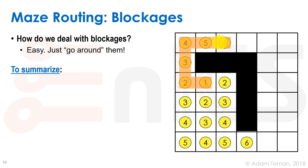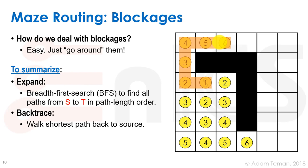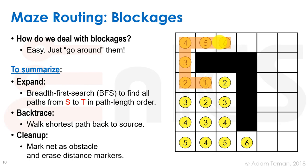To summarize maze routing: expand is a breadth-first search (BFS) that finds all paths from source to target in path-length order. Backtrace walks the shortest path back from target to source. Cleanup marks the net as an obstacle and erases all distance markers, which are irrelevant for the next net.